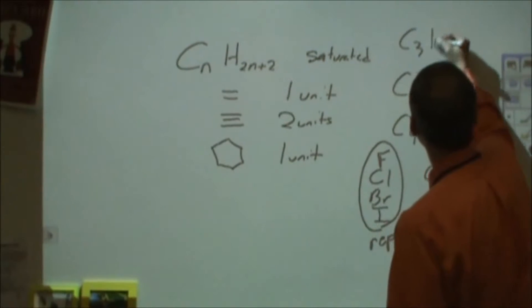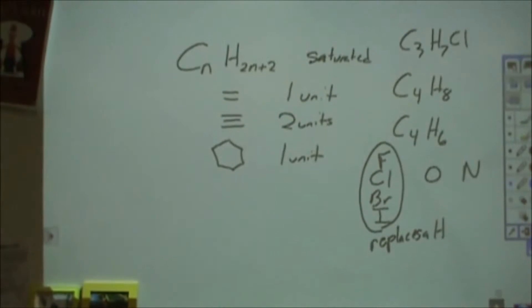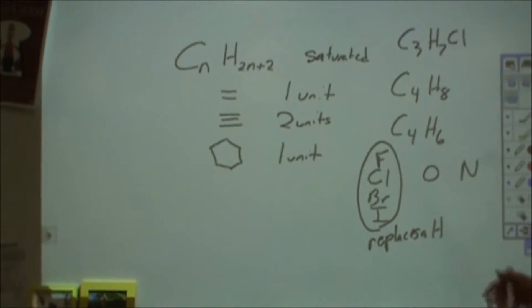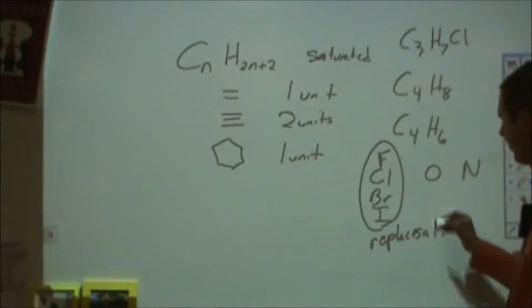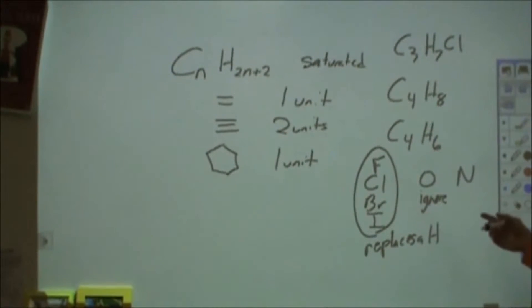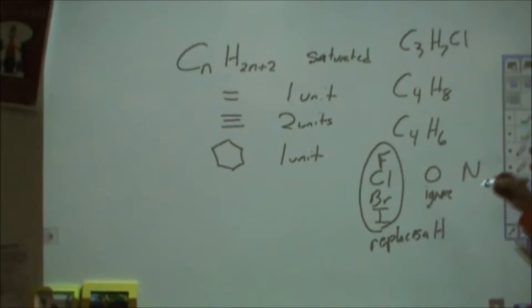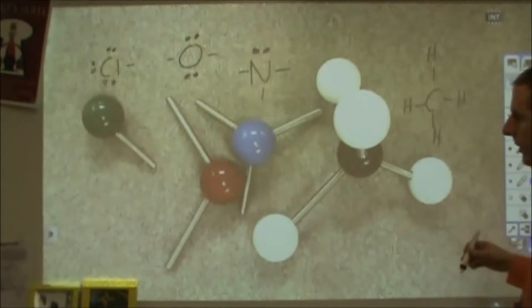So if I said C3H7Cl, I would count that as C3H8. When I'm doing my units of unsaturation, I'd be saturated. The oxygen, you ignore. We'll show why in a second. And then the nitrogen, you're subtracting a hydrogen. You need a new hydrogen to take care of that nitrogen. Now let's look at why a little bit.